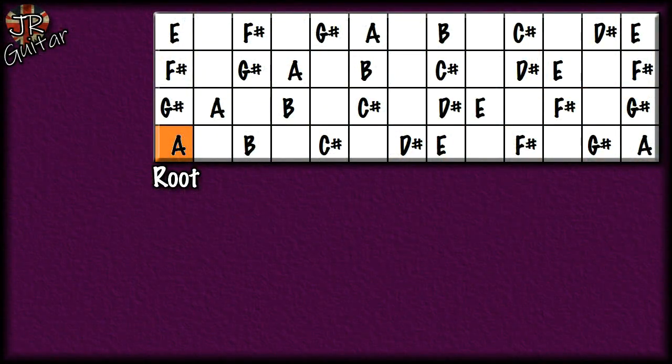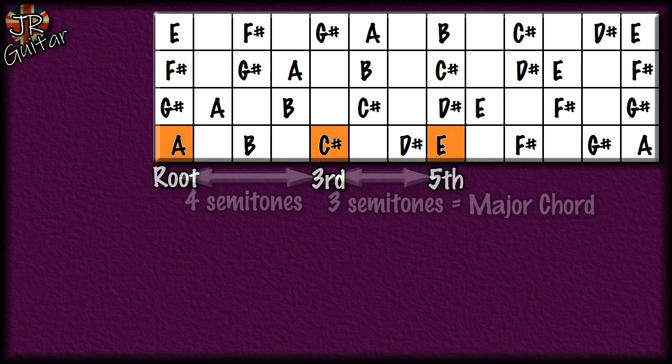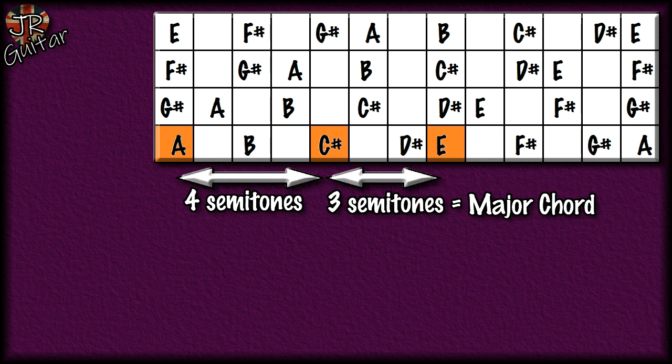Next we begin on the A note as the root. We have A, then the third is C#, then the fifth is E. Measuring the intervals, we have a four-semitone interval followed by a three-semitone interval — which, as we saw from the E chord earlier, gives us a major chord. So here are the notes of an A major chord.